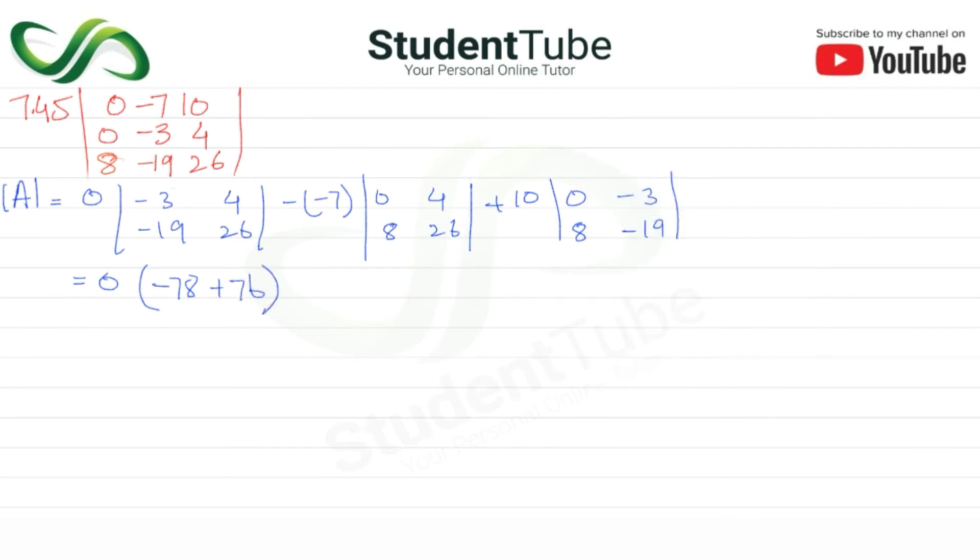76, plus 7. Now here, 26 times zero is 0, minus 8 times 4 is 32, plus 10, 0. Plus 8 times 3 is 24.